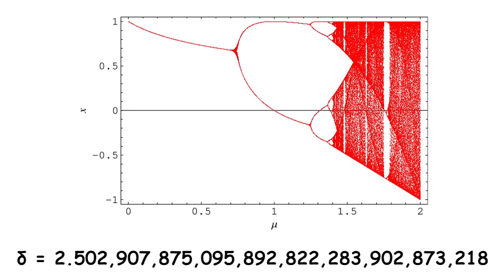The second Feigenbaum constant has a value of approximately 2.502. This constant describes the ratio between the width of a tine or branch and the width of one of its two sub-tines, except the tine closest to the fold, in the bifurcation diagram of certain non-linear dynamical systems.